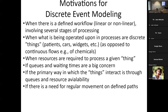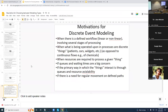Discrete event modeling is individual-level but doesn't tend to deal much with interaction between entities flowing through. You interact with others primarily by keeping them waiting. If you want entities to infect each other while in line, or to talk and exchange knowledge and attitudes about COVID, or spread norms during a workflow, you need to combine discrete event simulation with agent-based modeling — a hybrid model. And if there's a need for regular movement along defined paths, that's great for discrete event simulation.